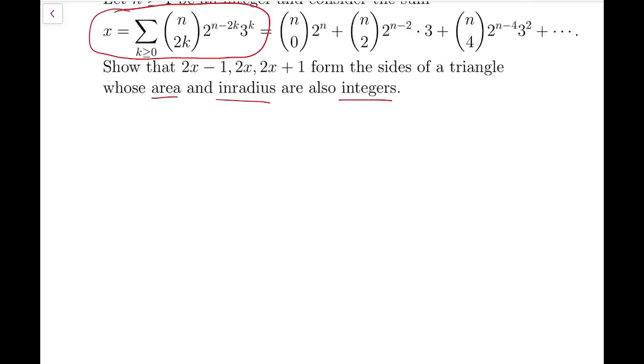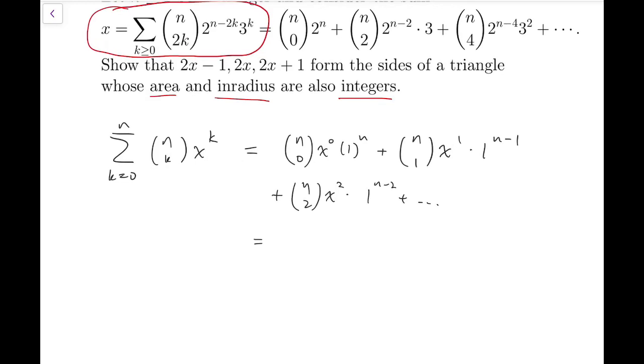The first part is we know that x is this kind of sum. The first thing that came to mind when I see this summation is the sum of binomial coefficients, something of the form n choose k times x to the k. This is written as n choose 0 times x to the 0 times 1 to the n, n choose 1 times x to the 1 times 1 to the n minus 1, and so on. This is in fact the expanded form of 1 plus x to the power n, obtained by the binomial theorem.